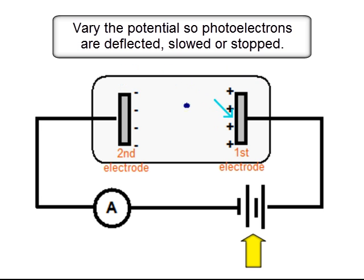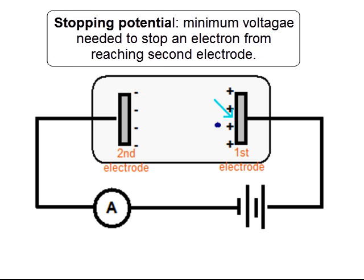We could increase the potential of the second electrode, in which case the photoelectrons will stop and be deflected. The minimum voltage when this happens is called the stopping potential.